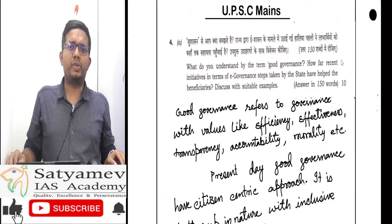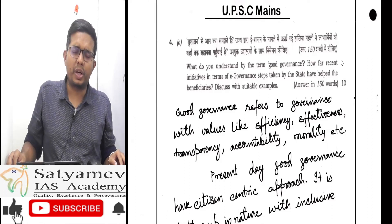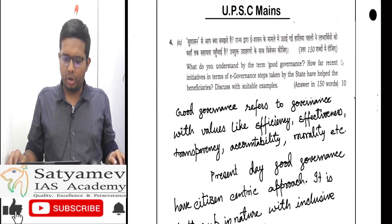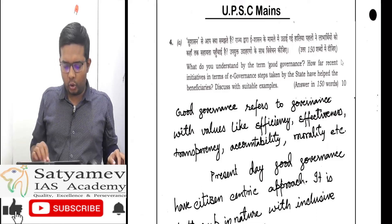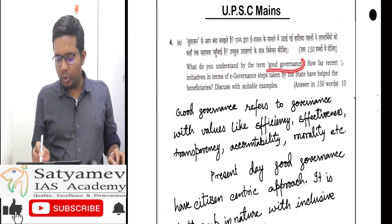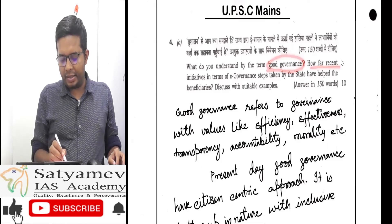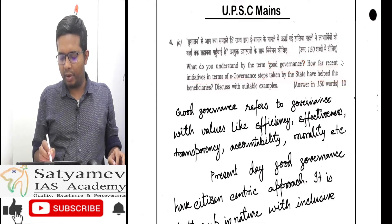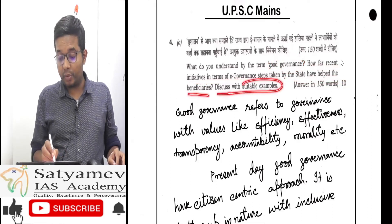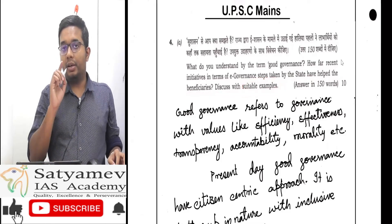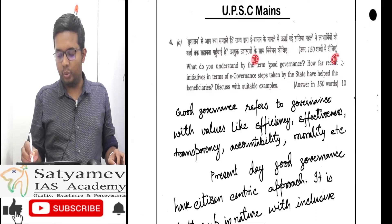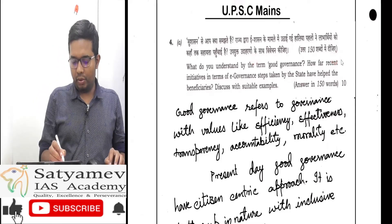Namaste. We are going to discuss the 2022 Paper 4 Ethics Question 4A. The question asks: what do you understand by the term 'good governance,' and how far have recent initiatives in terms of good governance steps taken by a state helped the beneficiaries? Discuss with suitable examples. There are two parts to this question — part one and part two.